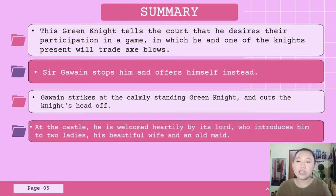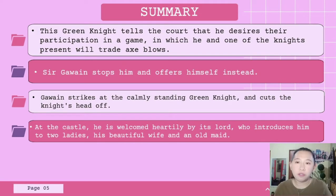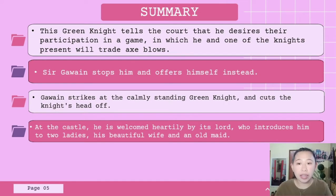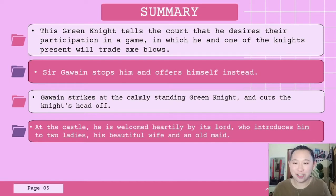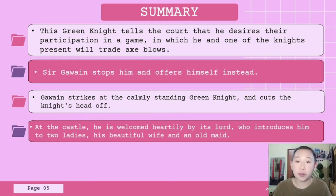At the castle, Gawain is welcomed heartily by its lord, who introduces him to two ladies: his beautiful wife and an old woman. The lord invites Gawain to play a game. Each day the lord will go out to hunt while Gawain rests in the court, and by the end of the day they will swap whatever they have won. Whatever the lord gets will be given to Gawain, and whatever Gawain gets in the court will be given to the lord.